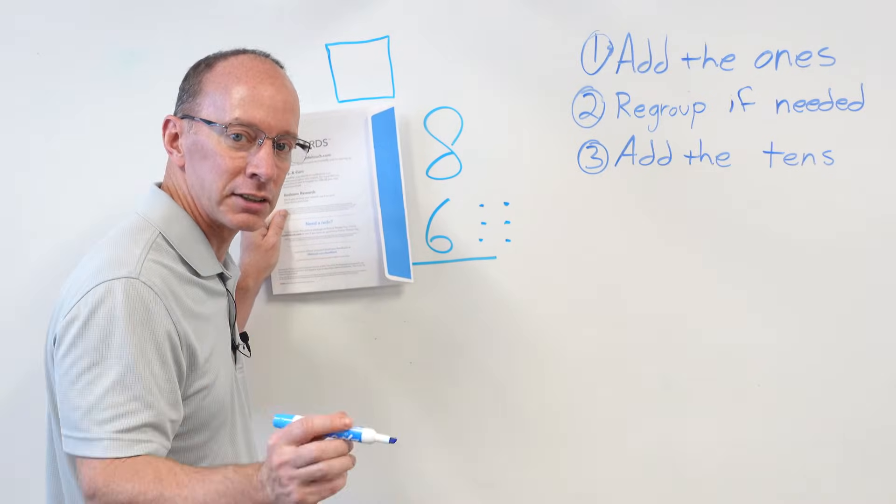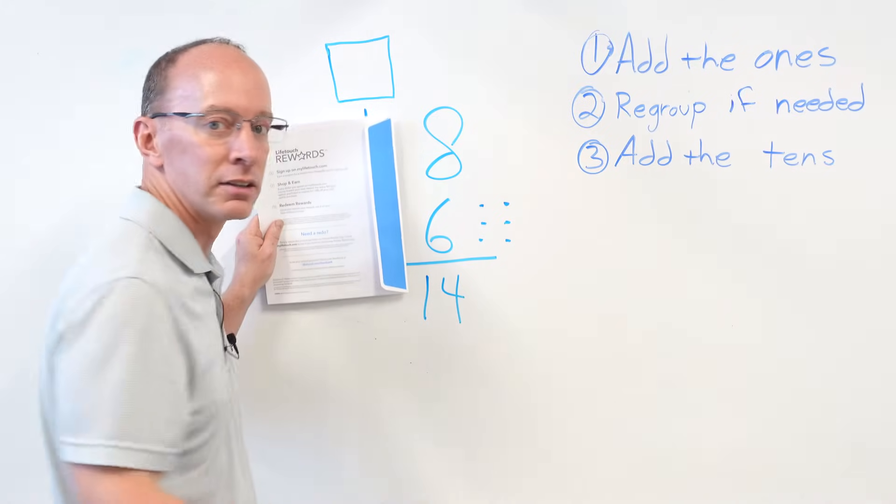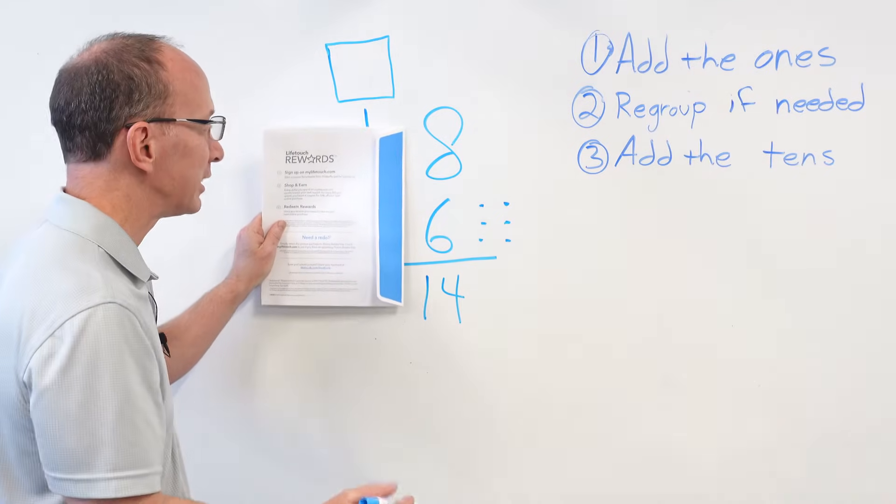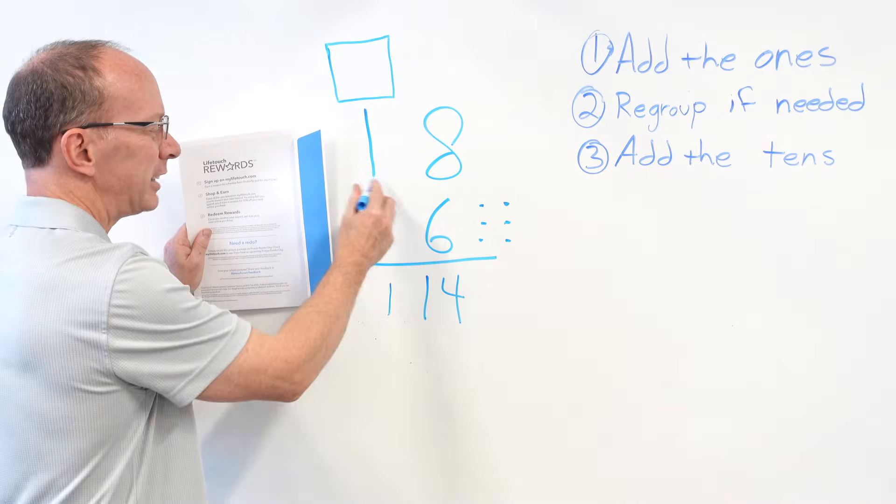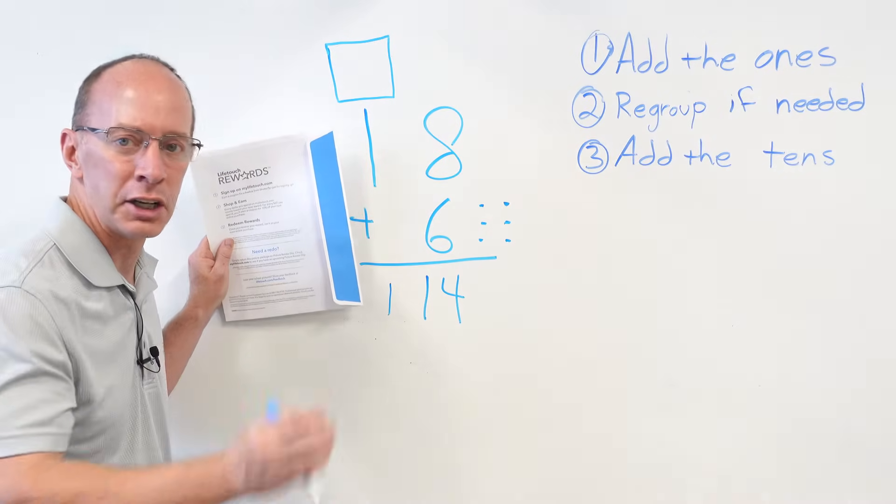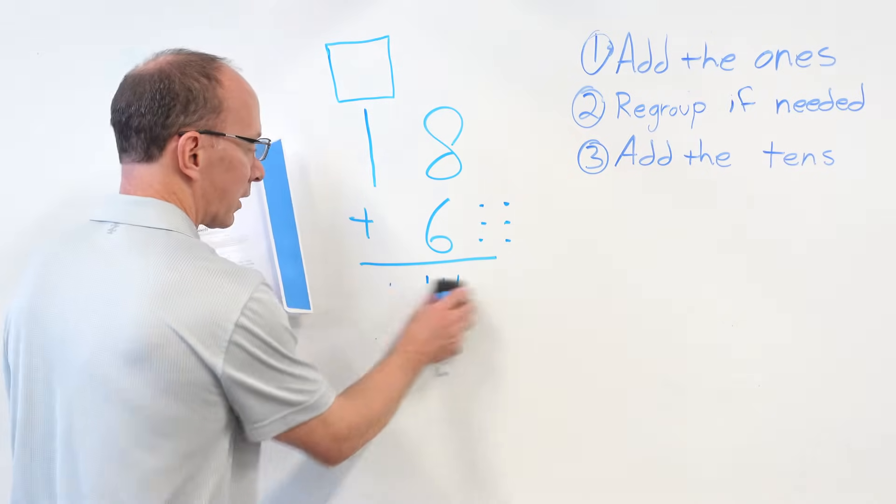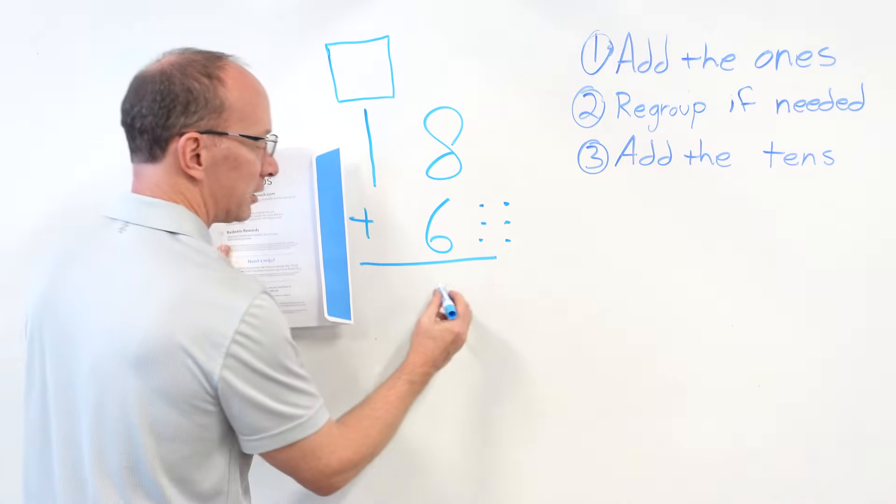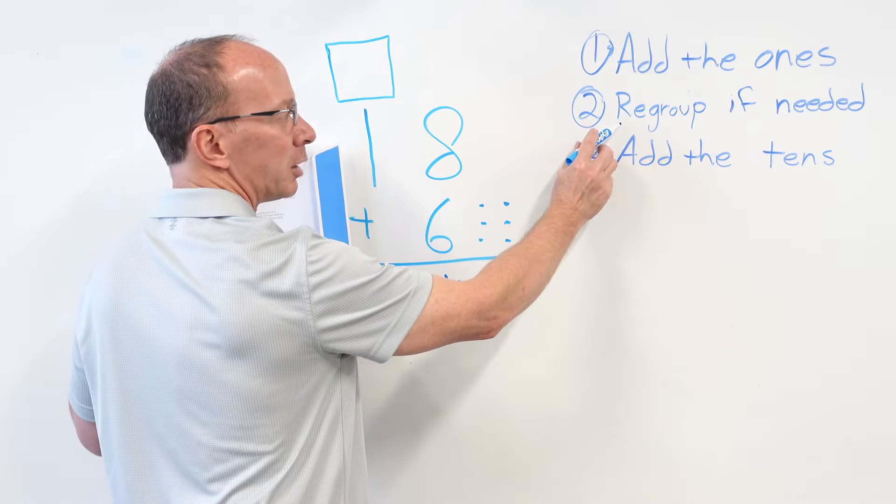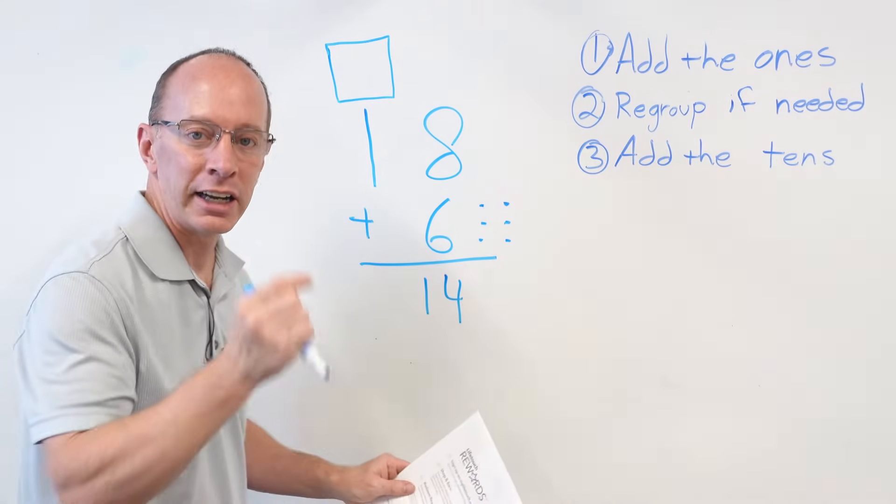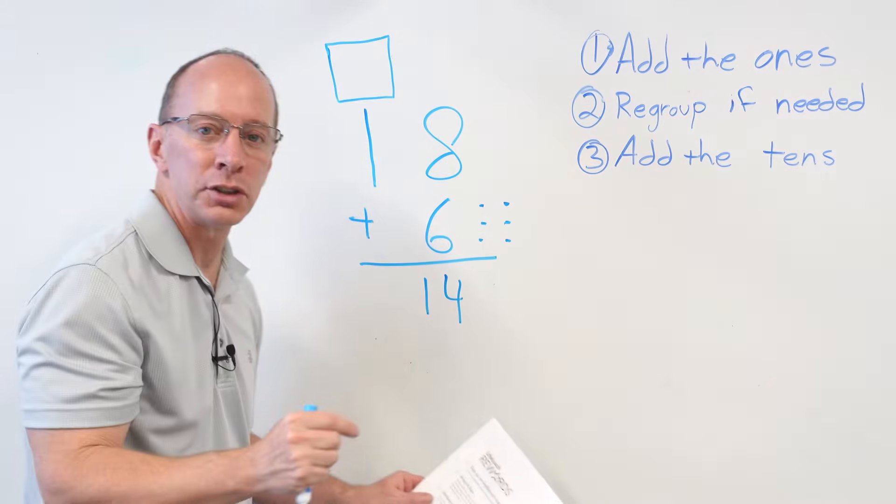Our first reaction for doing something like that would be 8 plus 6, and you would put a 14 right here. But if I were to add then the 1 plus 0, I'd put a 1. 18 plus 6 equals 114? No. You know you did something wrong. So let's go back here. And 8 plus 6 is 14. Now, it says right here on number 2, regroup if needed. And you're going to hear something called carry. So you're going to carry that number over into the tens place.